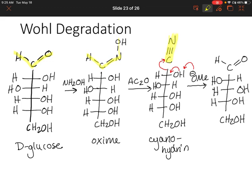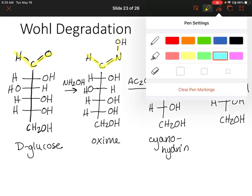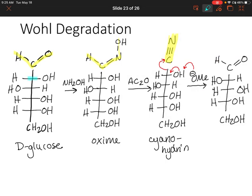We've got this cyano group, and we're actually going to turn that first chiral center into our aldehyde in the final product. So again, this is just a chain shortening reaction. You could create all sorts of sugars using these different reactions — either the chain lengthening or the chain shortening reaction.